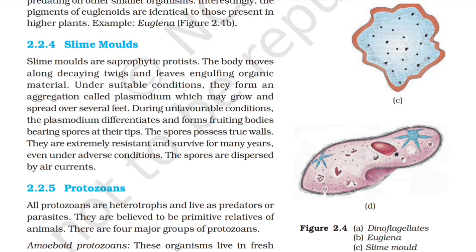2.2.4 Slime Molds. Slime molds are saprophytic protists. The body moves along decaying twigs and leaves engulfing organic material. Under suitable conditions, they form an aggregation called plasmodium, which may grow and spread over several feet. During unfavorable conditions, the plasmodium differentiates and forms fruiting bodies bearing spores at their tips. The spores possess tough walls, are extremely resistant, and survive for many years even under adverse conditions. The spores are dispersed by air currents.